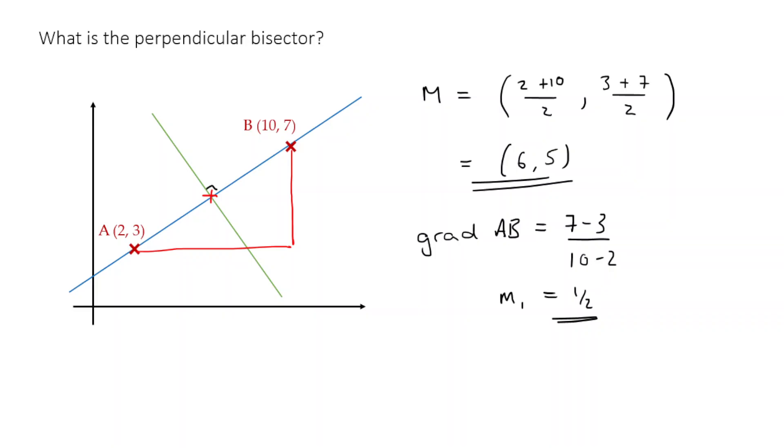Well, remember from a previous class, what we'd said is that if two gradients are perpendicular, then their product M1 times by M2 must be equal to negative 1, right? So if we know that M1 is a half, right? So a half times by M2 is equal to negative 1. Well, that tells us that M2 must equal to negative 2, right?